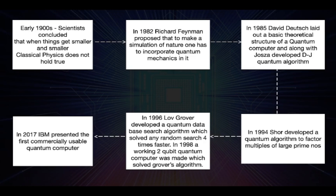David Deutsch laid out a basic theoretical structure of a quantum computer in 1985. Deutsch, along with Joza, developed the first quantum algorithm called the DJ algorithm, which was exponentially faster than any classical algorithm. Then in 1994, Shor developed a quantum algorithm to factor multiples of large prime numbers, and the world went insane because RSA encryption schemes were built on the assumption that classical computers would take ages to factor such numbers.